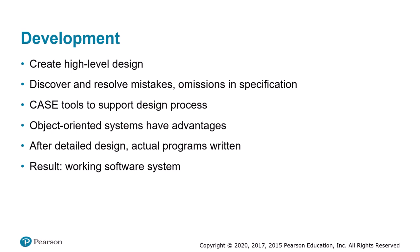When the design has reached a sufficient level of detail, software engineers write the actual computer programs implementing the software system. Many different programming languages exist, each with strengths and weaknesses, but programmers usually implement object-oriented systems using an object-oriented programming language such as C++, Java, or C Sharp.